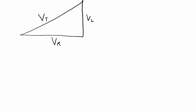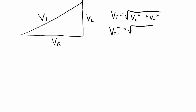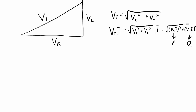Algebraically, the magnitude of the total voltage equals the square root of VR squared plus VL squared. Multiplying both sides by I gives Vt·I = √(VR² + VL²) · I. Distributing I inside the square root yields √((VR·I)² + (VL·I)²). Inside the brackets, VR·I equals real power P and VL·I equals reactive power Q, and Vt·I is the apparent power S. So S = √(P² + Q²), exactly as shown in the power triangle.